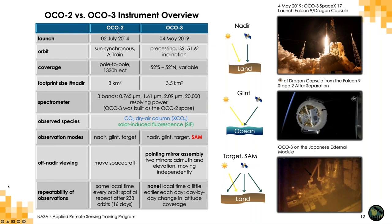To summarize: nadir observations look straight down; glint observations look toward the glint spot over the ocean; and for target and SAM observations, we look at different angles across a particular target. OCO-2 was launched in 2014, OCO-3 in 2019. OCO-2 has a sun-synchronous orbit passing over at the same local time every day with pole-to-pole coverage. OCO-3 on the Space Station has a precessing orbit with more limited latitude coverage and varying time of day. With OCO-2 we can predict where and when we'll get observations on any given day; with OCO-3's precessing orbit, it's much harder to predict long in advance.